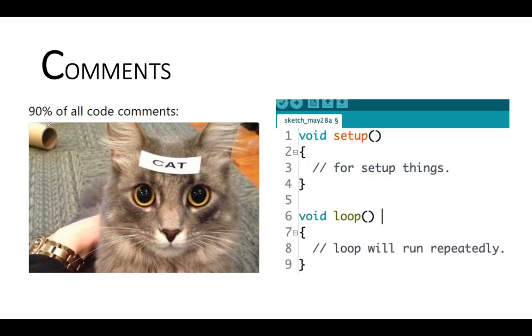This is a meme that I found on the internet. 90% of all code comments are like this. That's a cat and then you put a label cat which is already known.